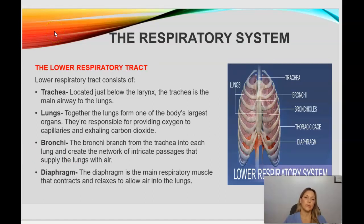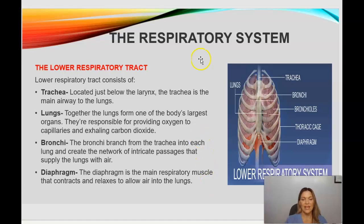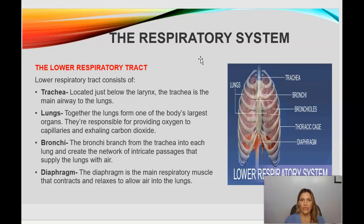Looking at the lower respiratory tract, you can see a diagram of it here. The trachea is located just below the larynx and is the main airway to the lungs. Together, the lungs form one of the body's largest organs and are responsible for providing oxygen to capillaries and exhaling carbon dioxide. The bronchi branch from the trachea into each lung and create a network of intricate passages that supply the lungs with air. The diaphragm is the main respiratory muscle that contracts and relaxes to allow air into the lungs.